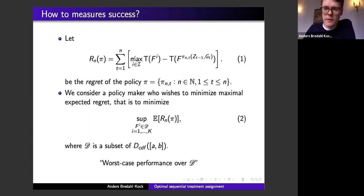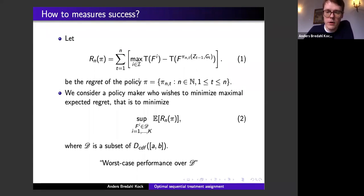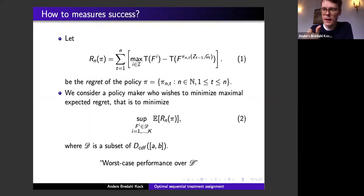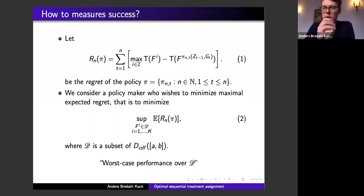That difference — best possible minus actual — summed over all N assignments, is what we call the regret of policy π. The goal is to prove upper bounds on worst-case performance: we look at the expected regret and maximize over a set of potential outcome distributions D. Good policies are those with good worst-case performance — policies that are minimax optimal.